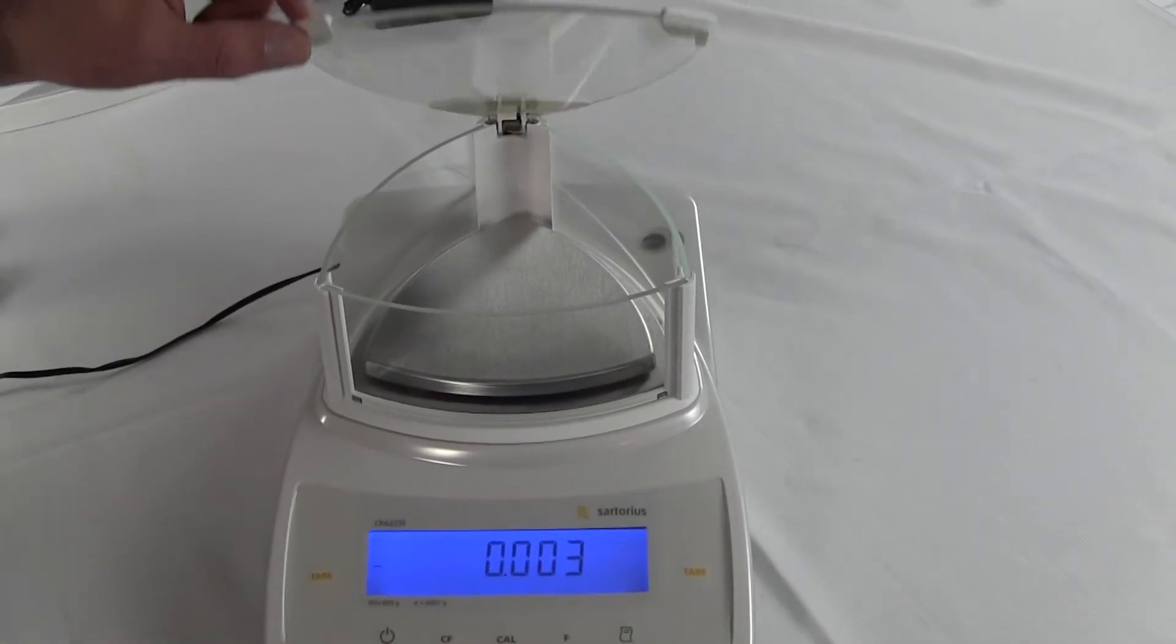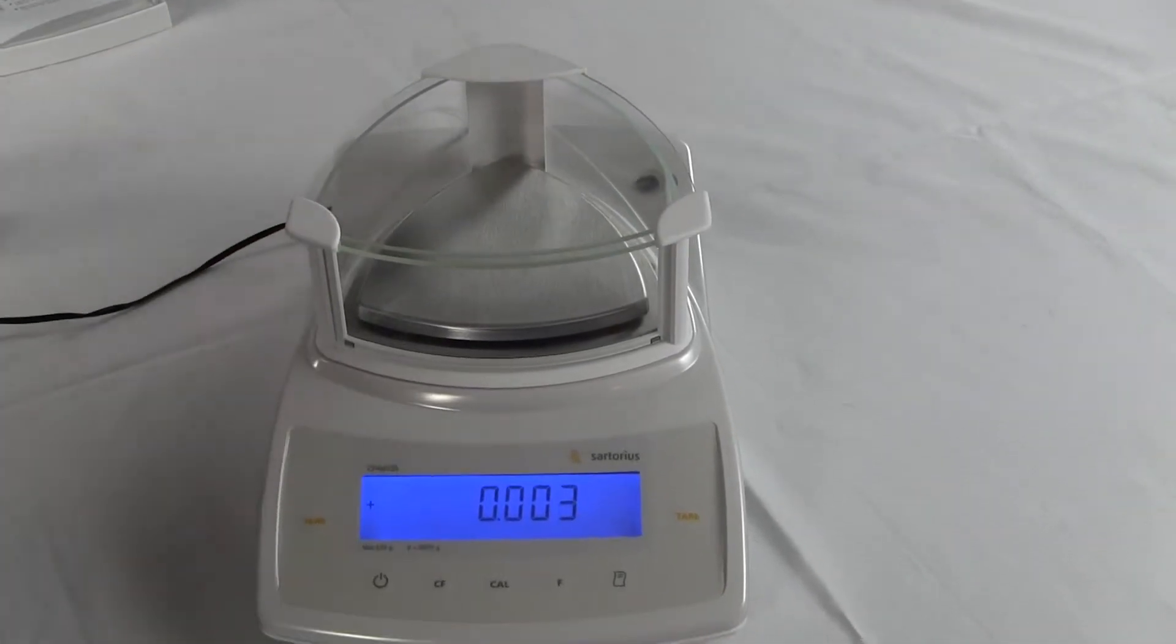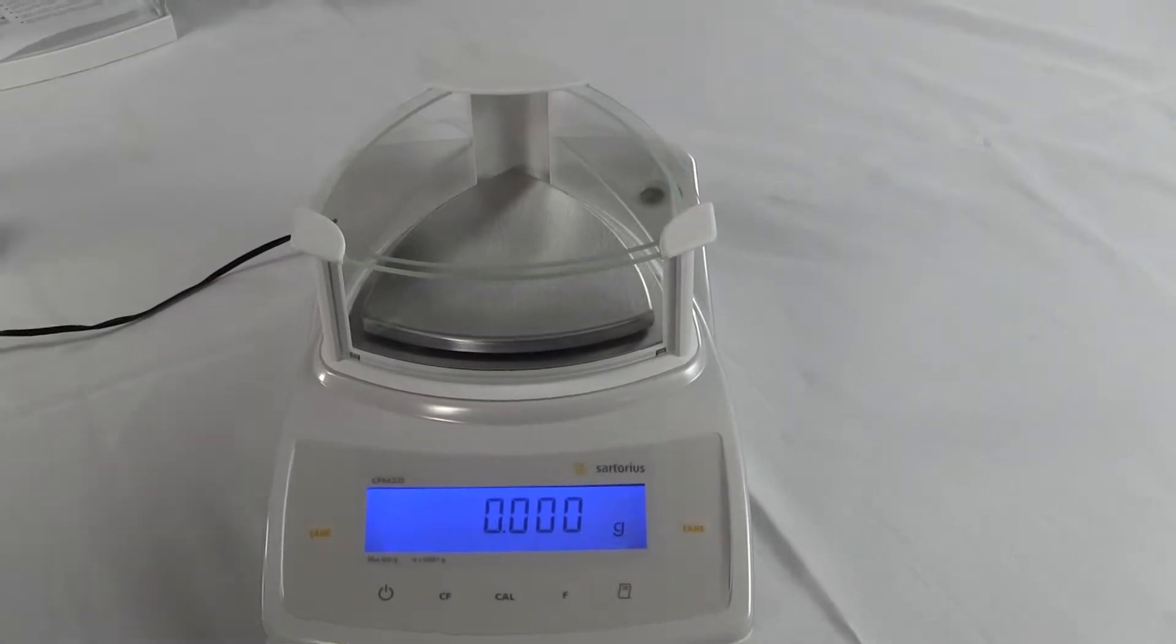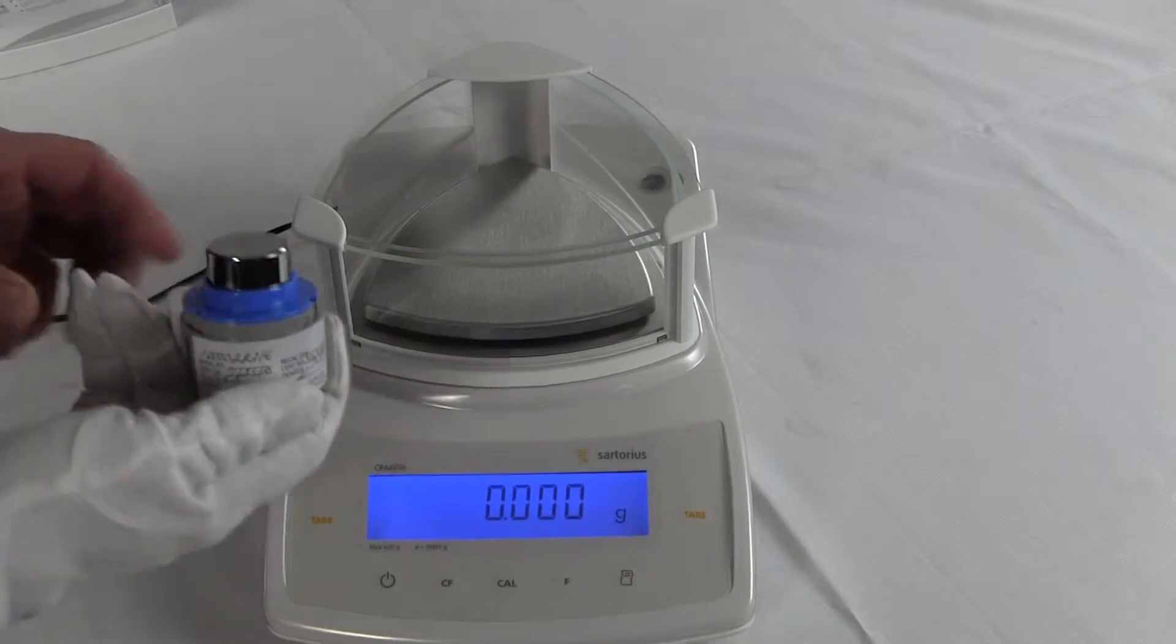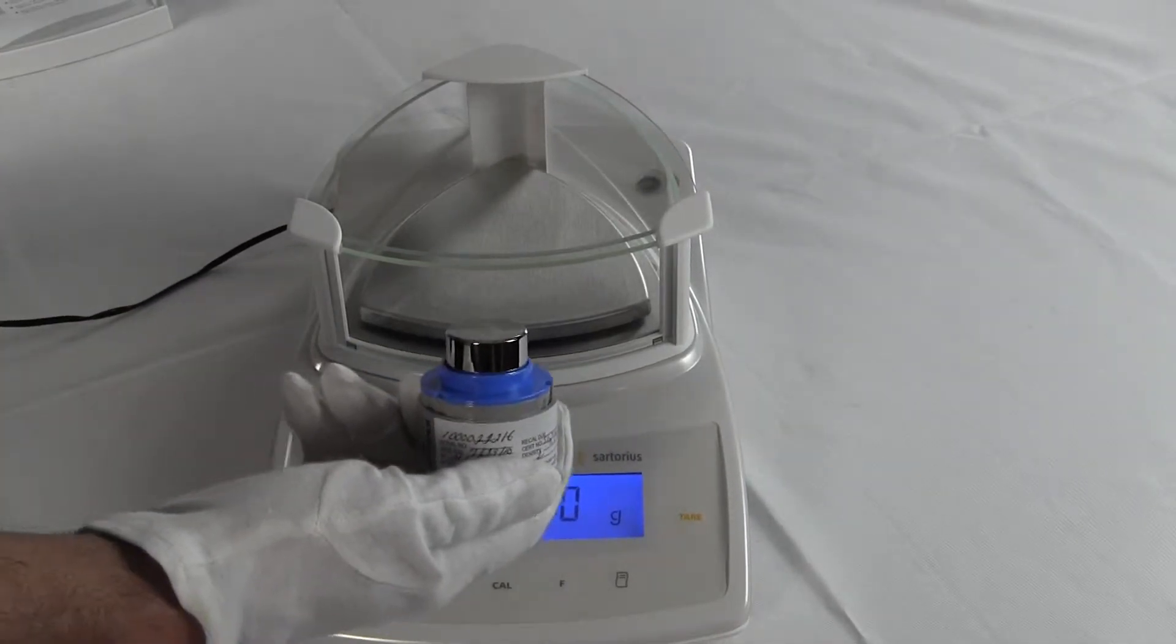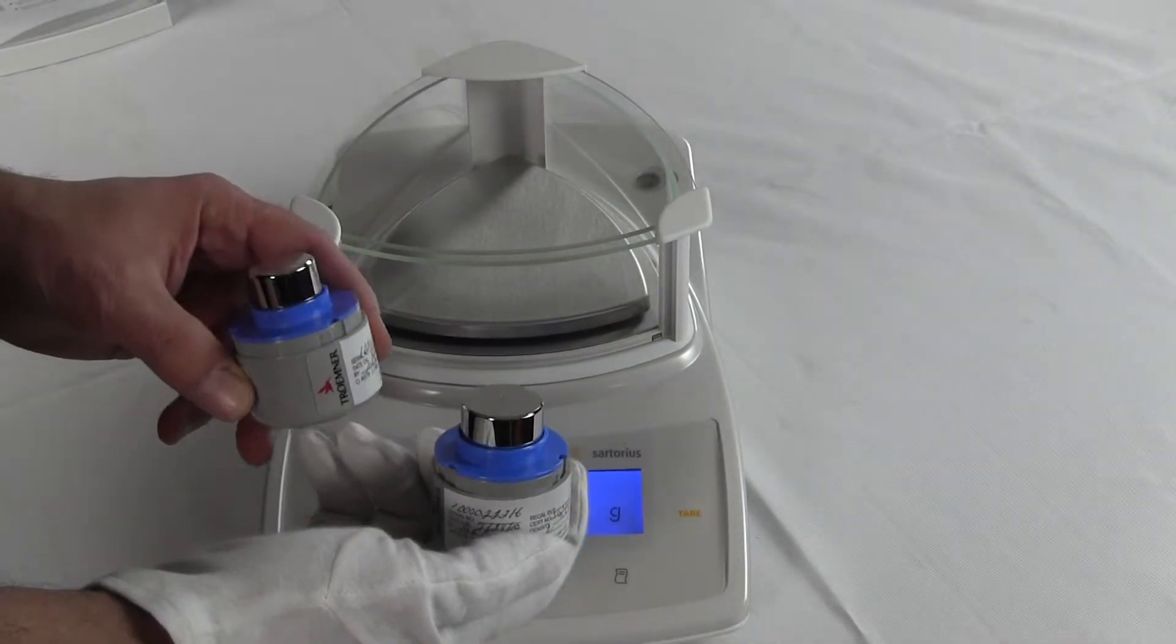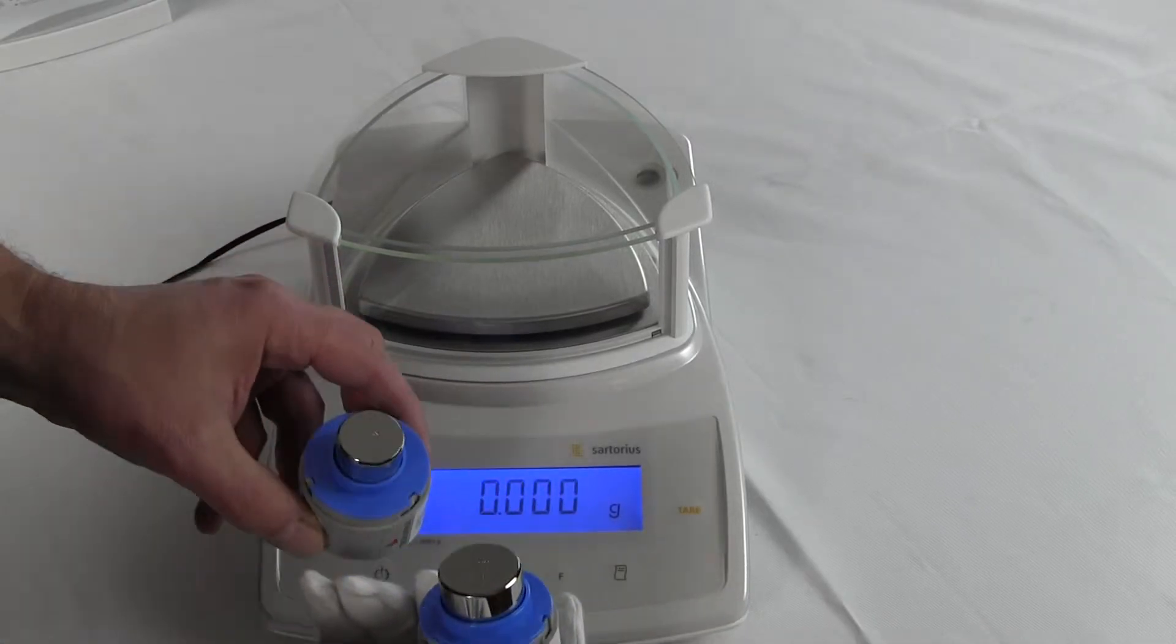The door flips up. Now this scale is a three-decimal place balance. It has motorized internal calibration. I do have some calibration weights here. This is a Class 1 200 gram weight and I also have a Class 1 100 gram weight.